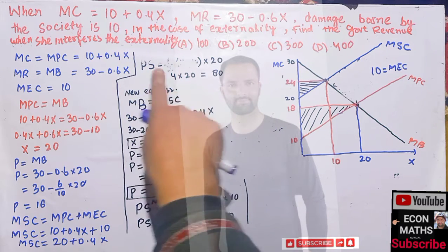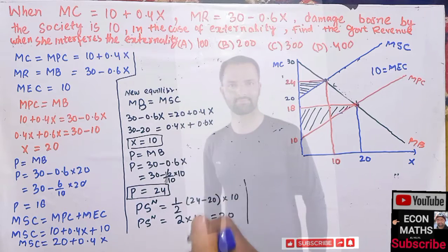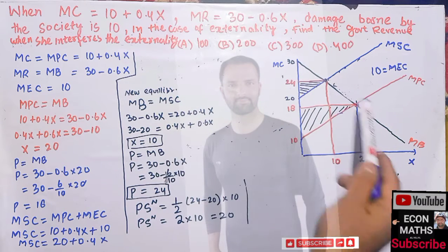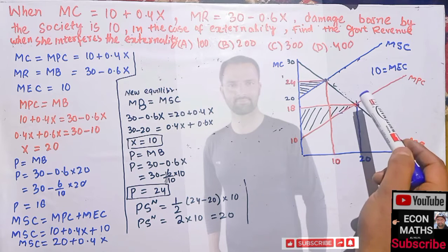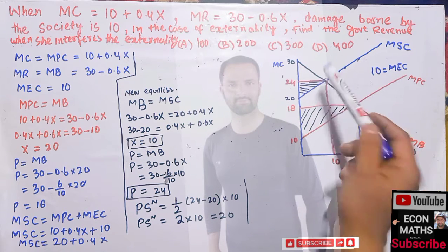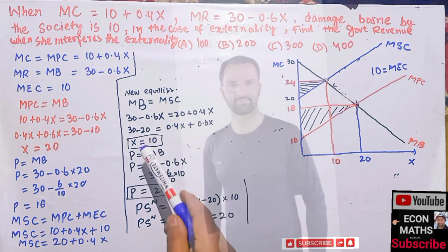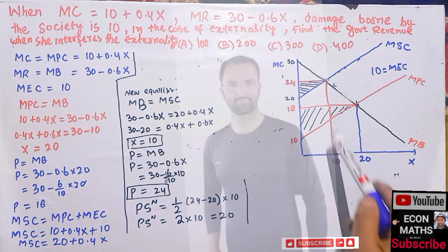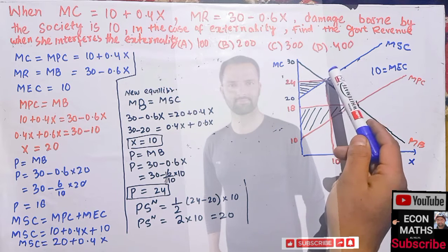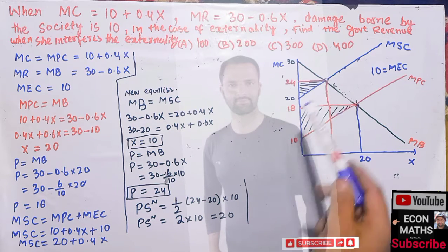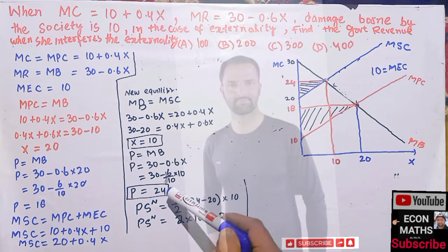Our marginal social cost will be this function. At the new equilibrium, the marginal benefit curve should equal marginal social cost. We shift from the old point to the new point. Solving at this point, we get x equal to 10 — we produce only 10 units at the socially optimal level. The price at this point is 24.